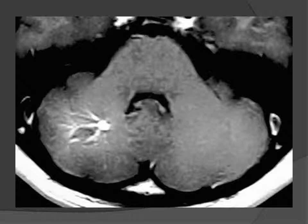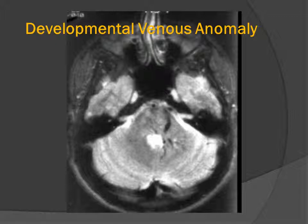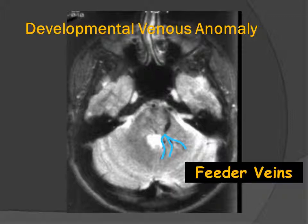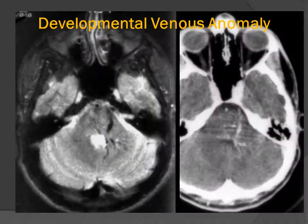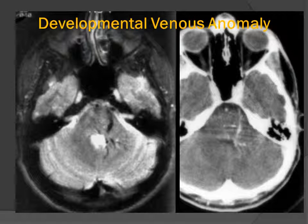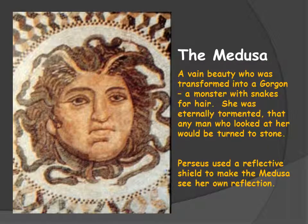Here's a posterior fossa developmental venous anomaly. We can clearly see multiple collector veins draining onto the head of a dominant transcortical or transmantle vein. Here is another posterior fossa DVA — again, multiple collector veins collecting onto the dominant transcortical vein. We may see these lesions on MR as flow voids, on CT as areas of increased attenuation due to the blood within these vascular structures, and there may be enhancement on both MR and CT.